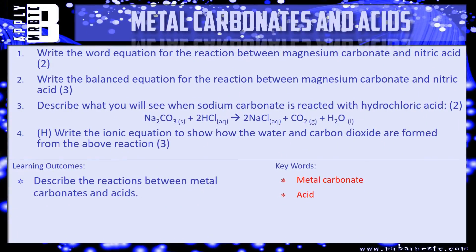Okay, if you've done that, let's look at a few questions. Question one: write the word equation for the reaction between magnesium carbonate and nitric acid — that's worth two marks, one for the reactants and one for the products. Question two: write the balanced equation for the same reaction. Question three: describe what you will see when sodium carbonate is reacted with hydrochloric acid — use state symbols to help, two things. Question four (higher paper): write the ionic equation to show how the water and carbon dioxide are formed — worth three marks. Pause the video and have a go.